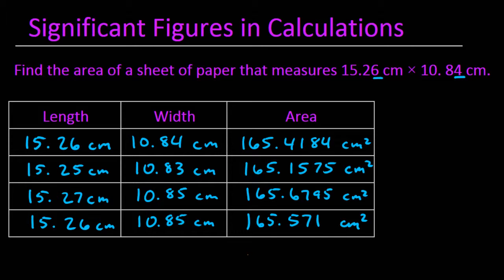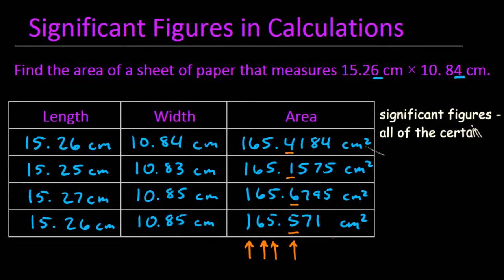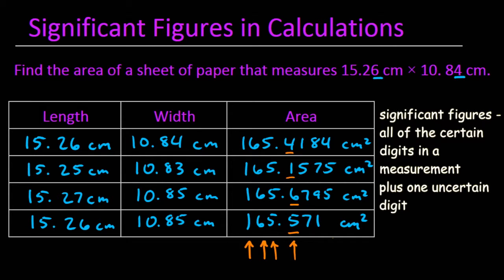If we were to analyze the answers, we would see that the hundreds place is certain, the tens place is certain, and the ones place is certain in all cases. However, when we get to the tenths place, we see some variation and this is where the uncertainty begins. Since we define significant figures as all of the certain digits in a measurement plus one uncertain digit, this means we should round all the answers off to the nearest tenth.